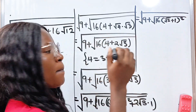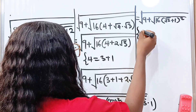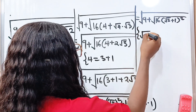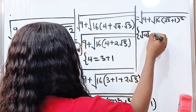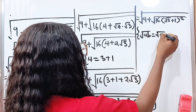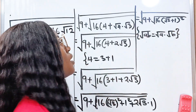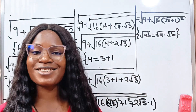Remember that square root of AB equals square root of A multiplied by square root of B.